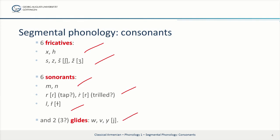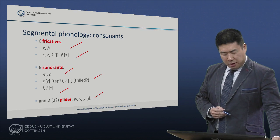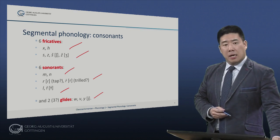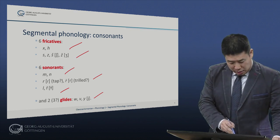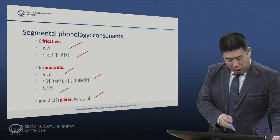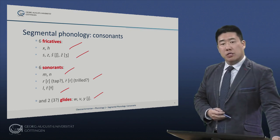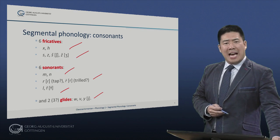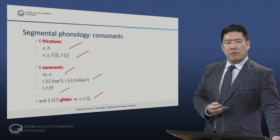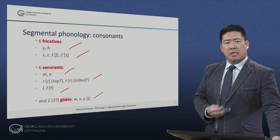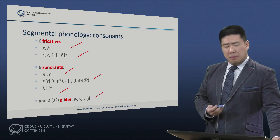Finally two or three glides: W, V, and Y. The last is transcribed Y as in English. The exact value of W and V continues to be debated.